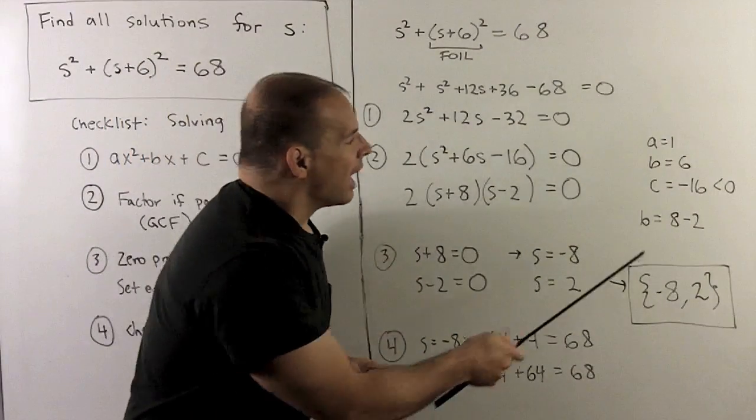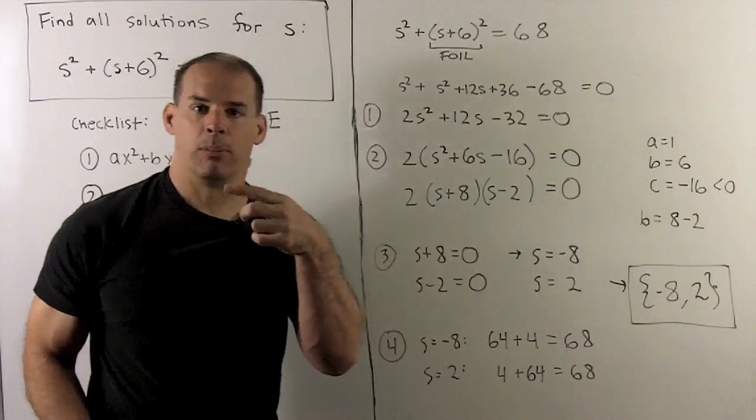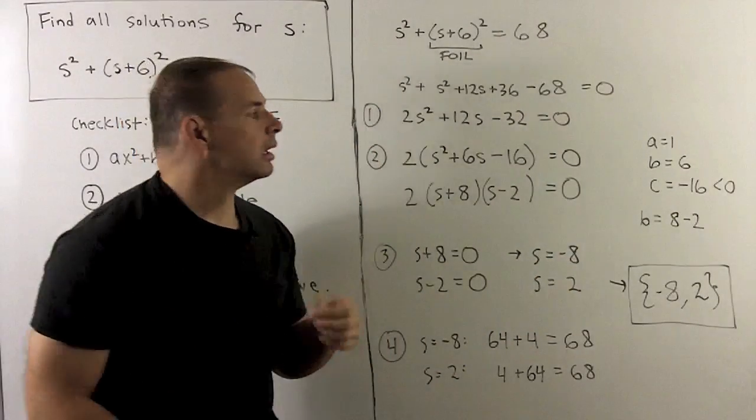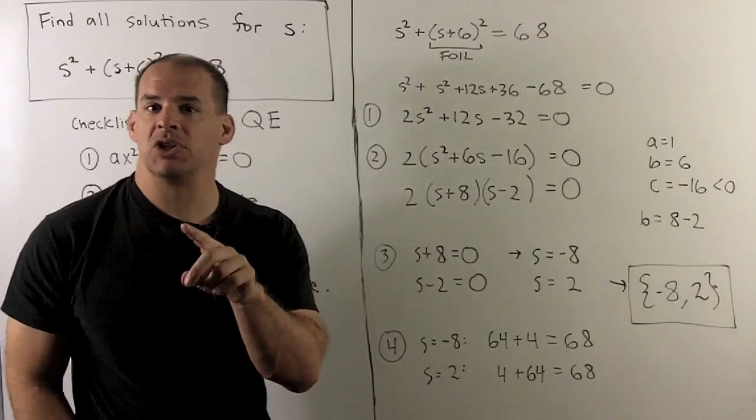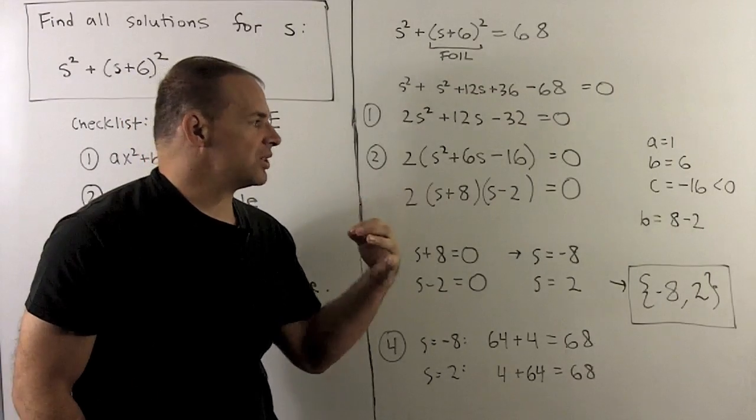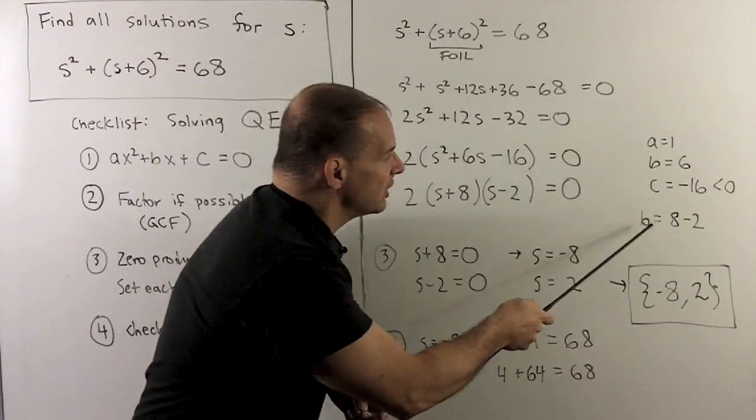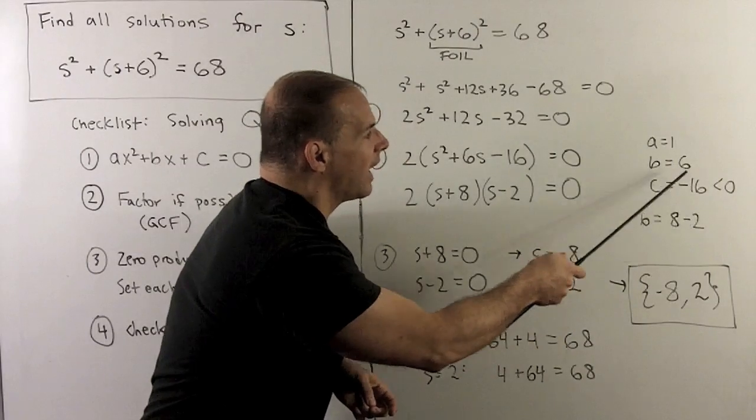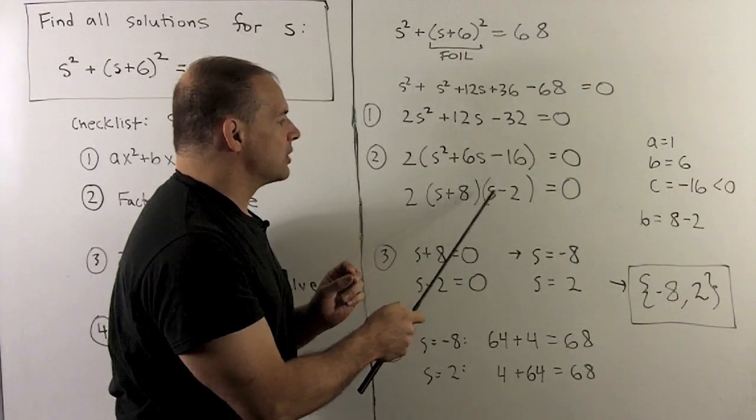Then, I'm looking for products of 16, factors that multiply to 16 that have their differences equal to six. Differences because we have one plus, one minus. If we go through 16 - one and 16, two and eight - two and eight is going to work. If I take eight minus two, I get six. And so our factors are going to be S plus eight, S minus two.